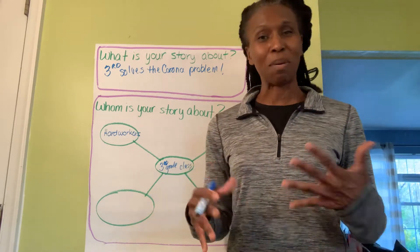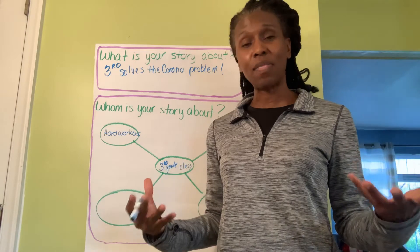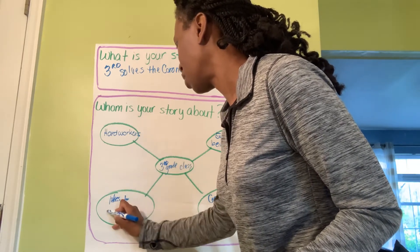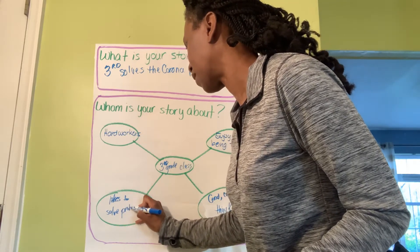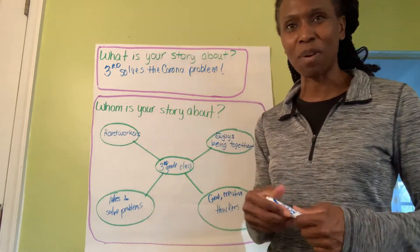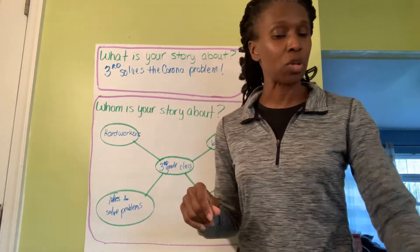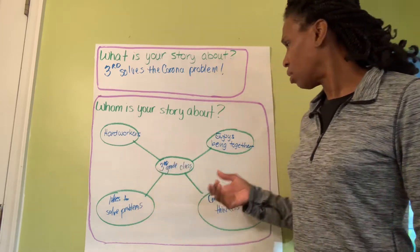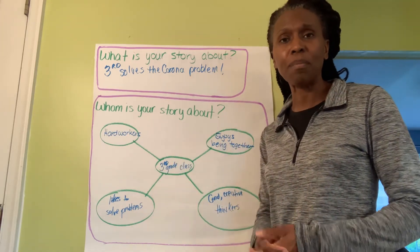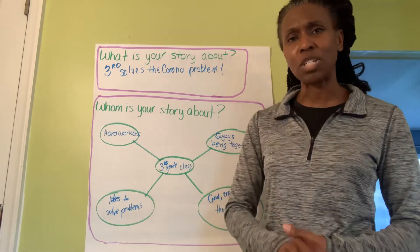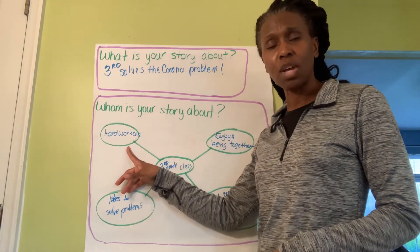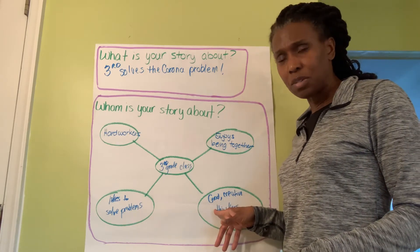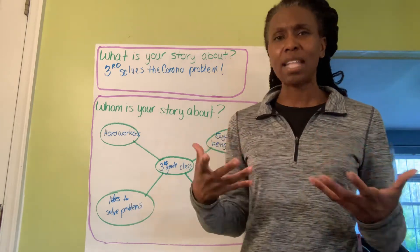The last characteristic is that we like to be problem solvers. In math we like to solve the math mystery — well, I think it follows that our class likes to solve problems. So I have my plot: the story is going to be about the third grade class solving the problem we have right now. The main characters like to be together — that's why we want to get everybody back to school, everything back to normal. We're hard workers, we're creative thinkers, and we like to solve problems. That's the main character of my story.